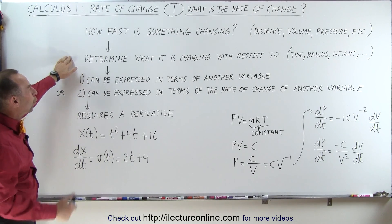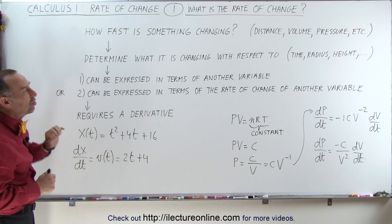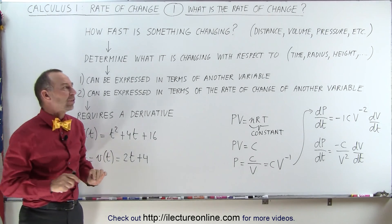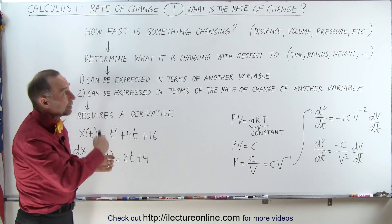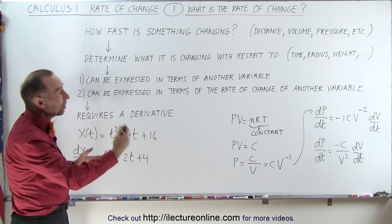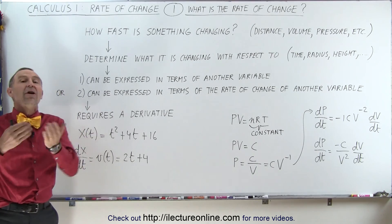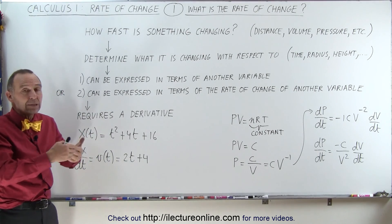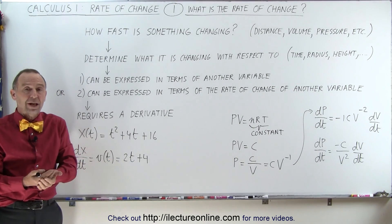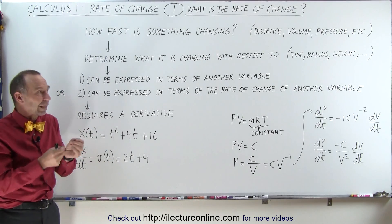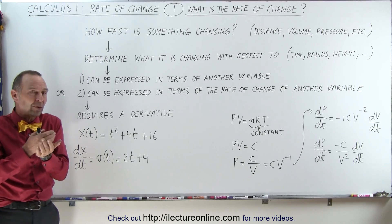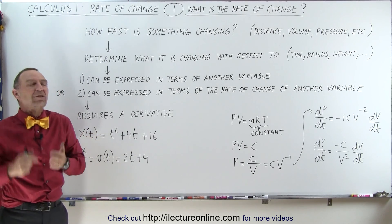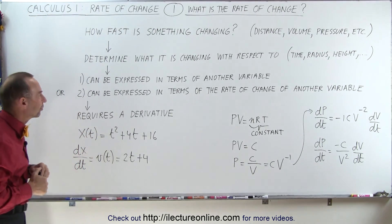It determines what is changing with respect to something else. That something else could be time, radius, height, and so forth. So how fast is the volume changing as a function of the radius, for example? That's where we always look for something changing with respect to something else.